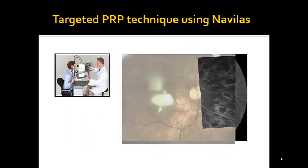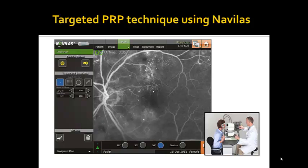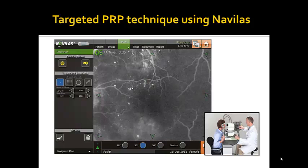For our study, we followed this same protocol. We imported from a third-party imaging device suitable wide-angle angiographic images. These images were then registered to images acquired by the NAVALAS system, and targeted areas for treatment were marked up. The areas to be treated could then use this plan for semi-automatic treatment processing.